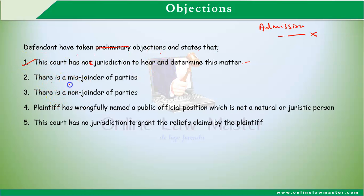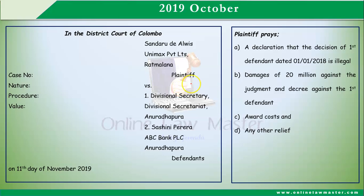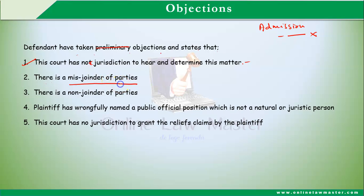The second objection is that there is a misjoinder of parties. As noted earlier, under the prayers the plaintiff has not claimed any reliefs from the second defendant. Therefore, you can say there is a misjoinder of parties and make an objection on that ground.